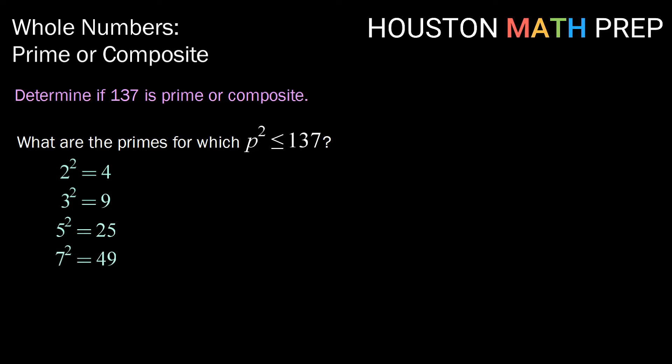Our next prime number is 7. 7 squared is 49. The next prime number after 7 is 11. 121 is still less than 137. The next prime after 11 is 13. Ah, but 13 squared is 169. So the candidates that we need to see if they divide evenly into 137 are 2, 3, 5, 7, and 11.